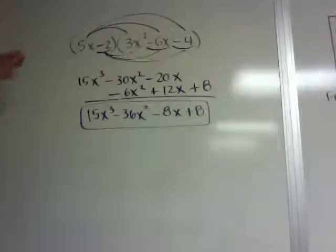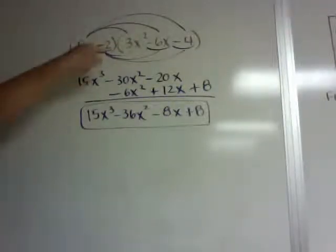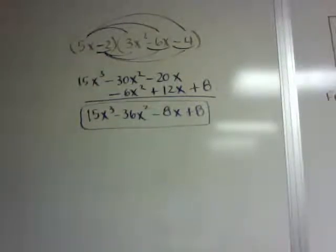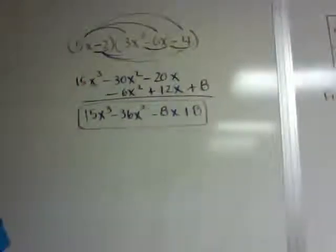So again, if you just get the basic understanding of distributing the first number in and then distributing the second one including the sign, that's basically FOIL, but with three terms.